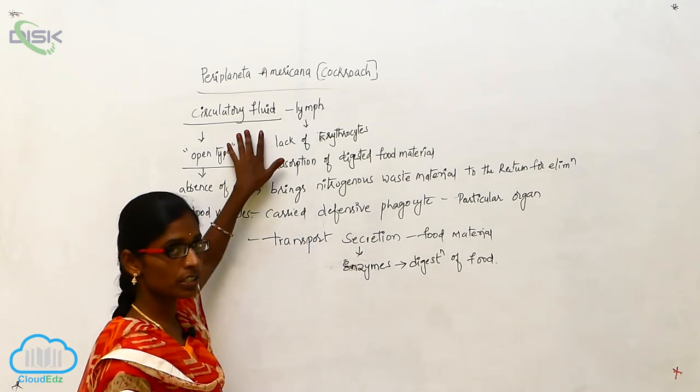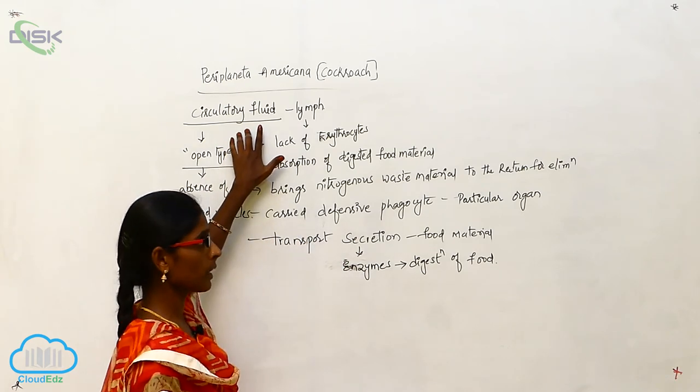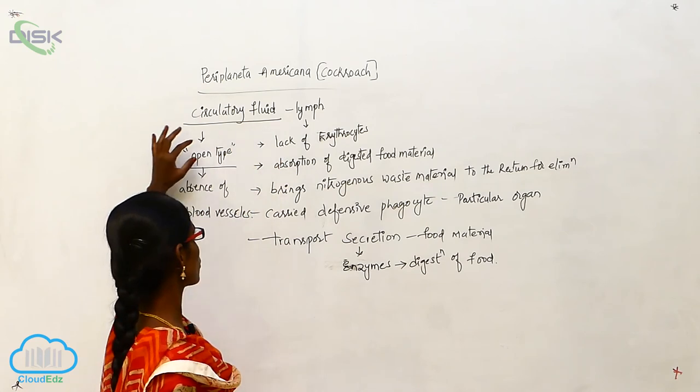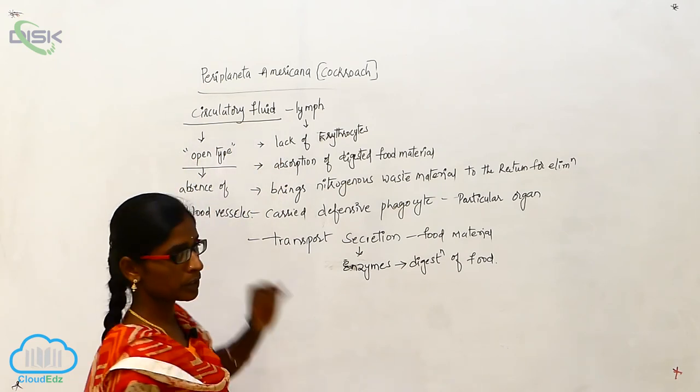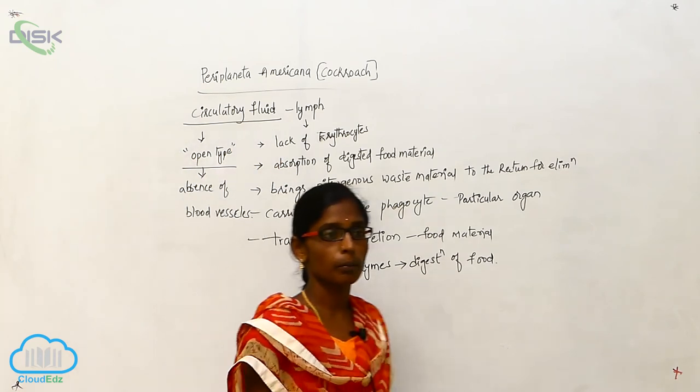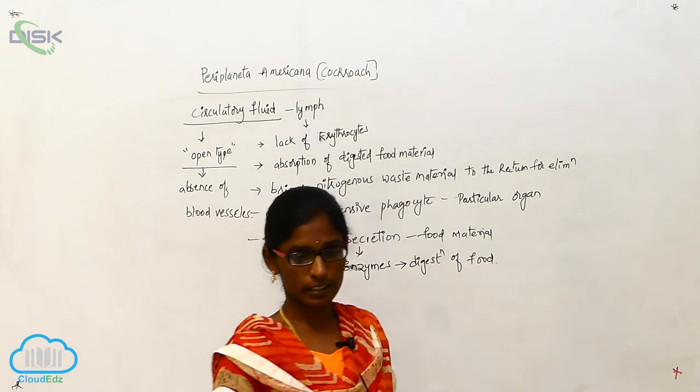In summary, the circulation in Periplaneta is an open type circulatory system due to the absence of blood vessels.